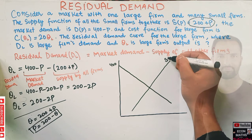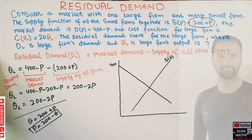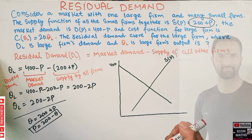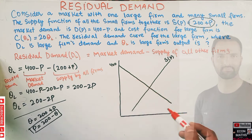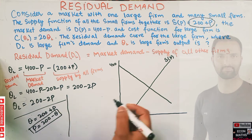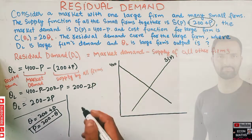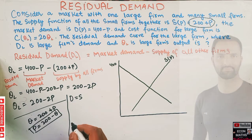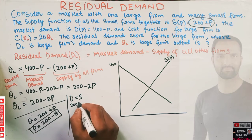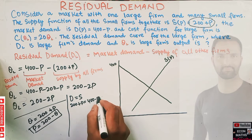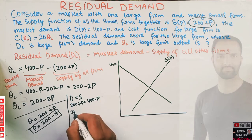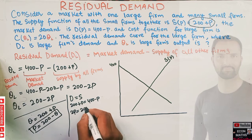Residual demand is the market demand minus the supply of all other firms. To find the market clearing point, we set supply equal to demand: 200 + P = 400 − P, which gives 2P = 200, so P = 100.